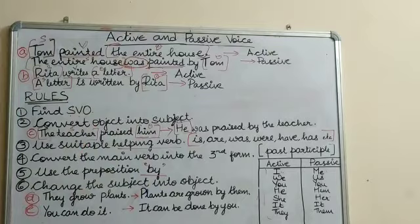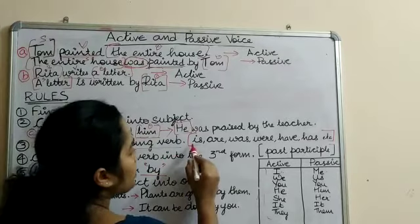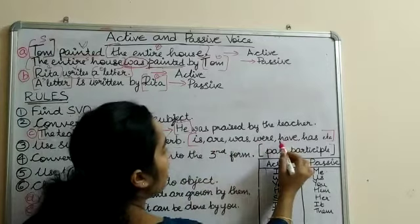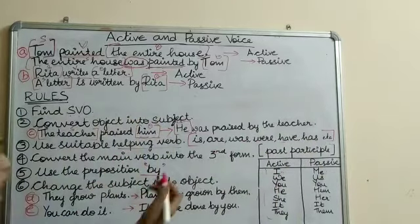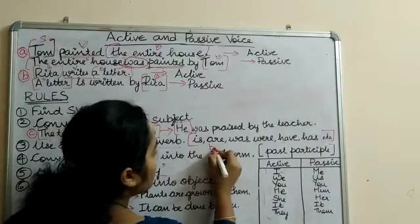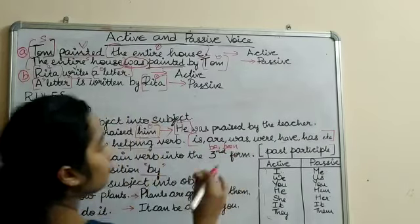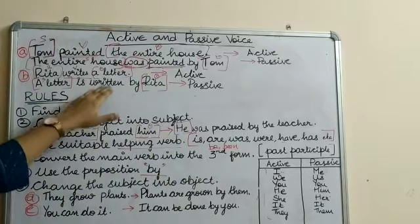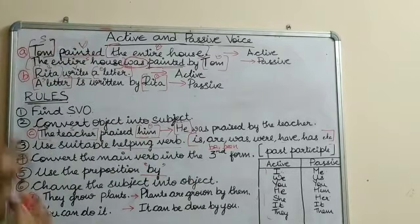We identify the main verb and then add a suitable helping verb. There are many helping verbs in English: is, are, was, were, have, has, be, been, will, would, shall, should, can, could. You have to look at the main verb and accordingly add the suitable helping verb.